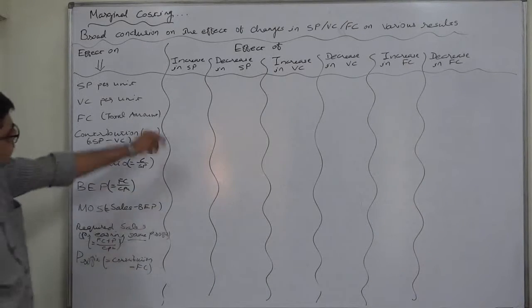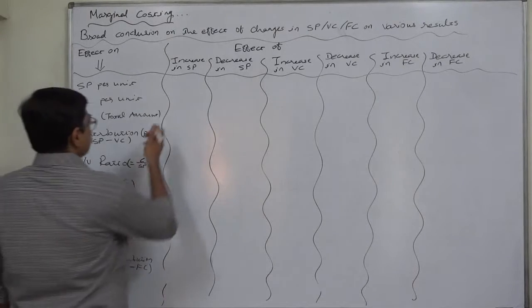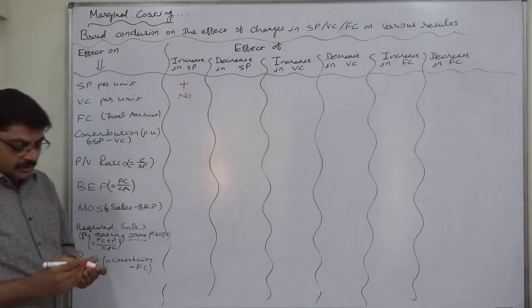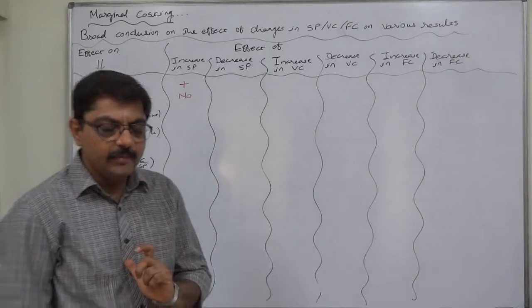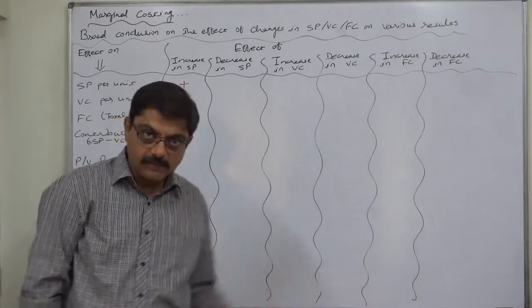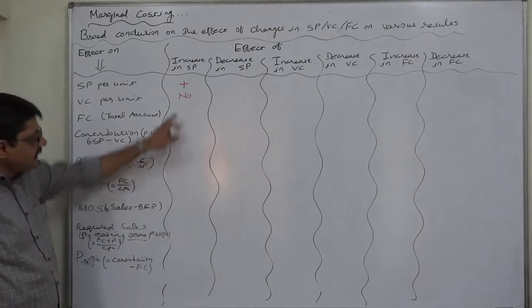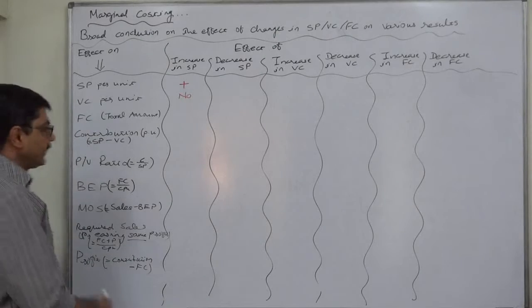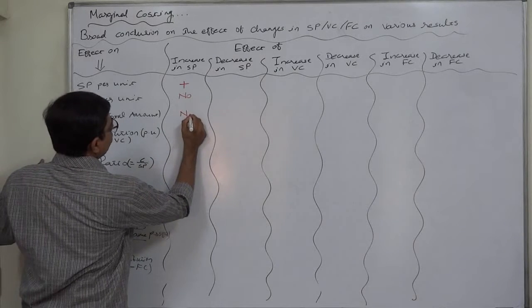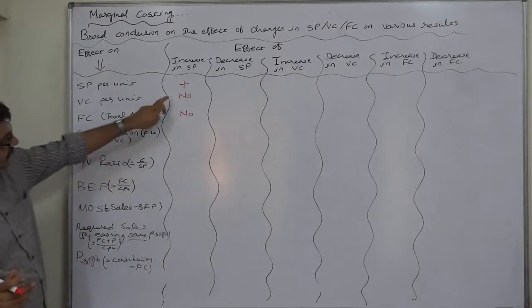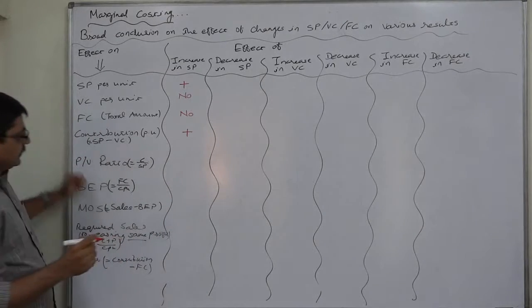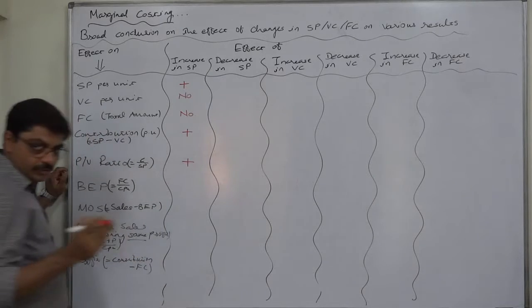First, let us take an increase in selling price. An increase in selling price means selling price is going to increase. There will be no change in variable cost, because an increase in selling price is a result of our decision, while variable cost is determined by external forces. So our decision of increasing or decreasing selling price does not affect the variable cost. Similarly, there will be no effect on fixed cost. But if variable cost remains constant and selling price increases, contribution will also increase, and the PV ratio will also increase.